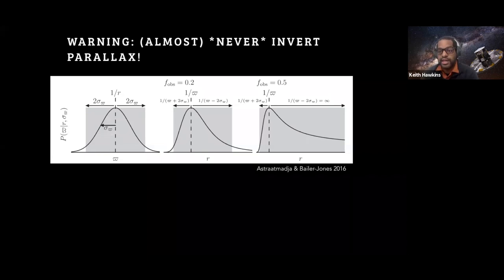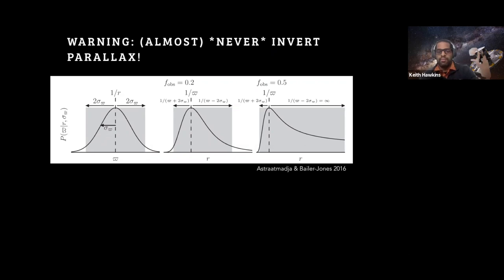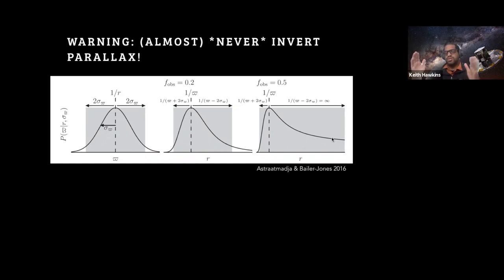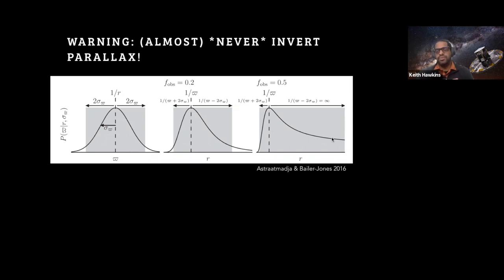A quick warning about Gaia: we're often taught to invert the parallax to get distance, but the Gaia team has largely said don't do that. The reason is error analysis: if you have Gaussian errors in parallax space, inverting the parallax to get the distance makes the PDF non-Gaussian. With 50% uncertainty in the parallax error, you wind up with a very skewed distance distribution and a biased estimator. So be very careful about naively inverting parallaxes, especially when parallax errors are large.